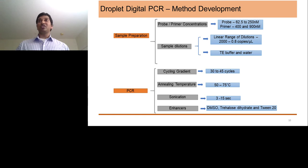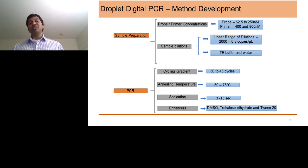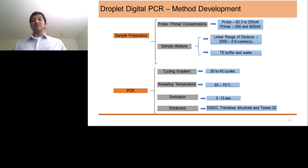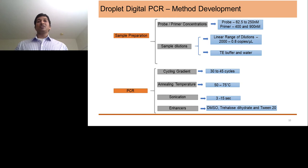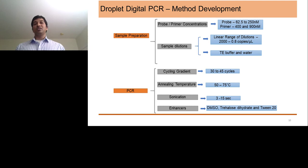The annealing temperature for primer-probe has to be robustly checked before optimizing your protocol. People try a range of 50 to 75 degrees and can do a gradient on your amplicon to identify the best temperature. Sonication is used for samples feeding a high amount of genomic DNA with a very low target — to really disrupt the viscosity of your genomic DNA. People test from 3 to 30 seconds of sonication. Enhancers like DMSO or betaine can also be used to help overcome inhibitors or to ensure semi-amplified products become fully amplified, moving those droplets into the positive population.